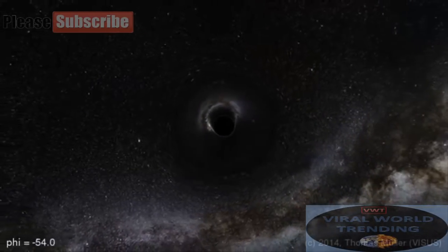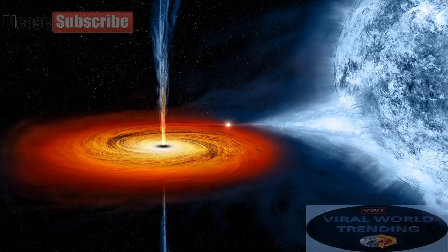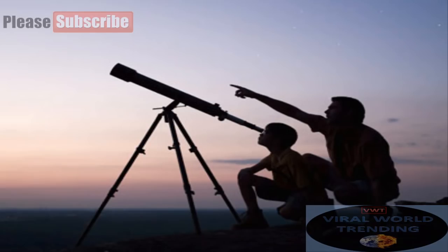Because no light can get out, people can't see black holes. They are invisible. Space telescopes with special tools can help find black holes. The special tools can see how stars that are very close to black holes act differently than other stars.